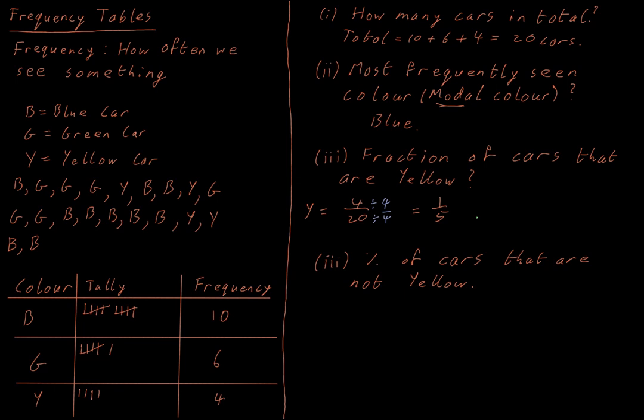And then finally, a slightly more complicated question. What percentage of the cars are not yellow? Well, there are two different ways of doing this, and we're going to look at both of them. So I know I have 20 cars in total. So not yellow, I'm going to call that NY for not yellow. And we're dealing with numbers here. So the number of cars that are not yellow would be 20 minus the four that are yellow. So there are 16 that are not yellow.